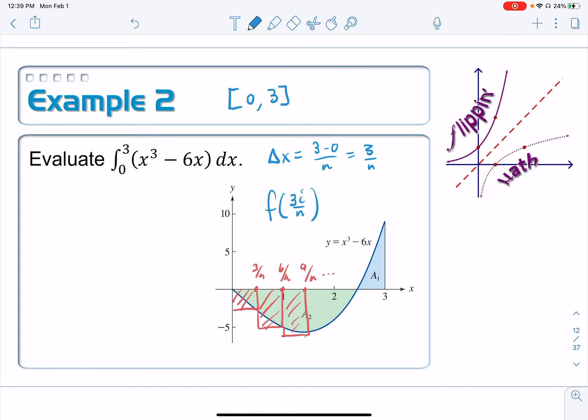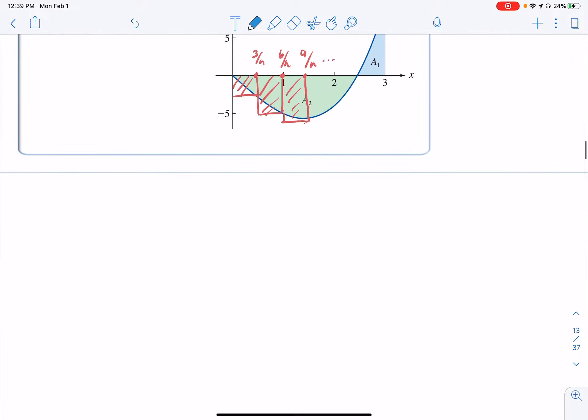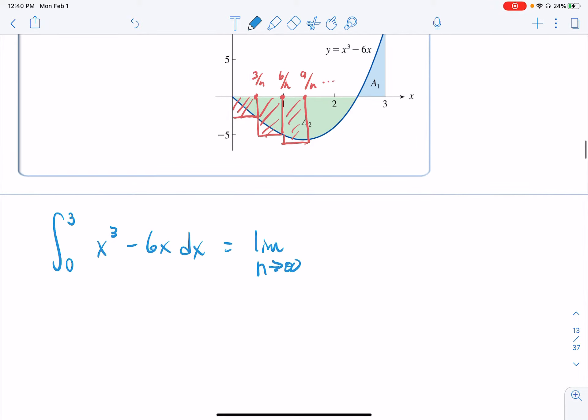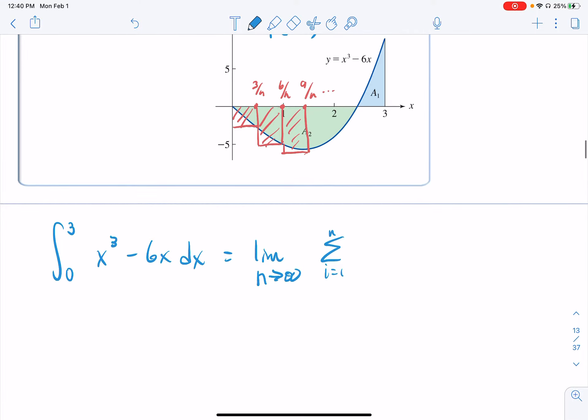Alright, let's rewrite then this definite integral as a limit of a Riemann sum with all of our new information here. So the definite integral from 0 to 3 of x cubed minus 6x dx is equal to the limit, and I'm going to use the notation probably exclusively as n goes to infinity. It's a heck of a lot easier to write than the other ones. Summation from i equals 1 to n, and then we need a couple of things inside here. We need our Riemann sum, which is a product of heights and widths, f of 3i over n times our delta x, which is 3 over n.